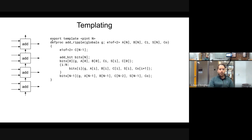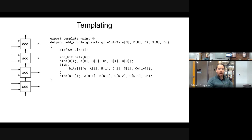To add templating, first define the template parameter — the number of bits. P_int is a type exclusively used for parameters in templating; it's not valid in production sets. Instead of four, we use N for the arrays, N minus one for the internal carry channels, and N for the adder bits.